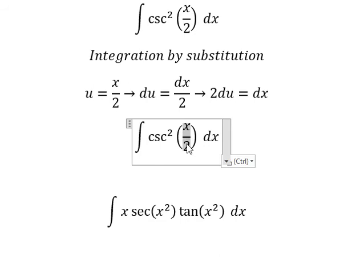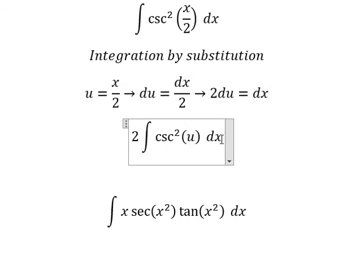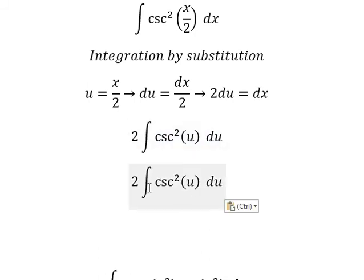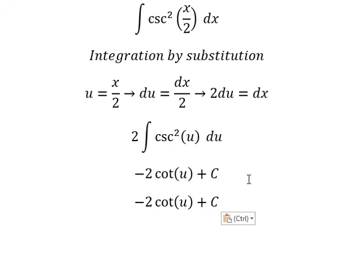This one we change for u. The x we change for 2 du. The integration of this one, we have negative cotangent u. And we put c. u is x over 2.